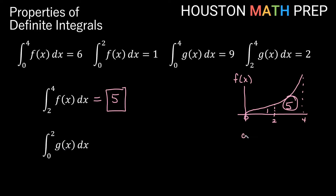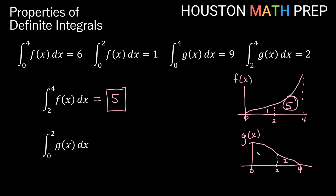Similarly for g of x: the integral from 0 to 4 is 9 total, and from 2 to 4 is 2. So the area from 0 to 2 must be 7, since 7 plus 2 equals 9. Therefore the definite integral of g from 0 to 2 is 7.